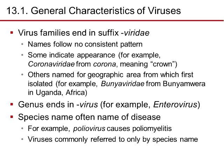Virus families use the suffix -viridae, but the naming follows no consistent pattern. Some indicate appearance — for example, Coronaviridae from corona, meaning crown. Others are named for a geographic area of first isolation, such as Bunyaviridae from the Bunyamwera area in Uganda, Africa. The genus suffix is -virus, for example enterovirus. Species names are often named for the disease, for example poliovirus causes poliomyelitis. Viruses are commonly referred to only by species names, as opposed to other organisms.